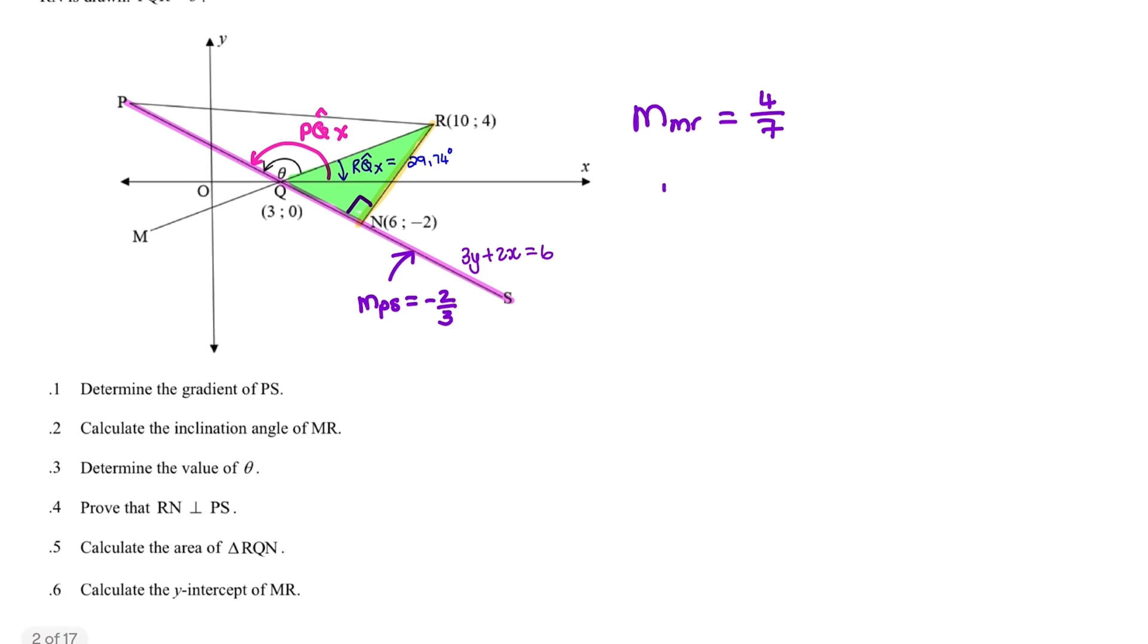Now we can say that y equals mx plus c. So we have y equals 4 over 7x plus c. And what we want to do is find the value of c because that represents the y-intercept in the equation of a straight line.